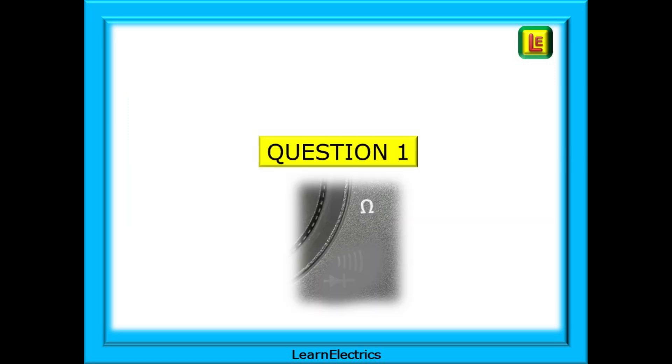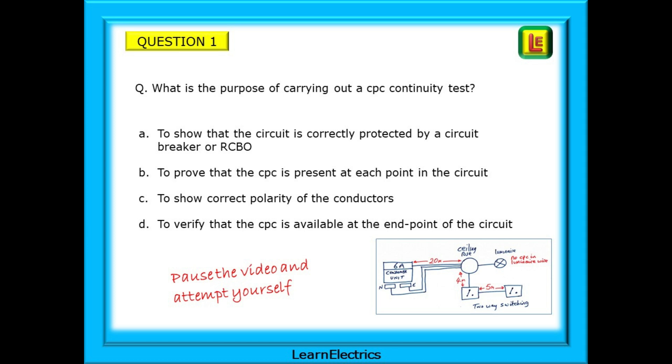Starting with question 1, this question will ask about the CPC and we should remember that the CPC or circuit protective conductor is the proper name for that bare conductor with green and yellow sleeving. It is still referred to as the earth by some and many manufacturers will mark their accessories with E for earth. The question asks what is the purpose of carrying out a CPC continuity test? There are four possible answers A to D. We should choose the most appropriate answer for the actual question. Sometimes you may find that two answers seem to fit but which one answers what the question is asking. Pause the video and attempt an answer yourself.